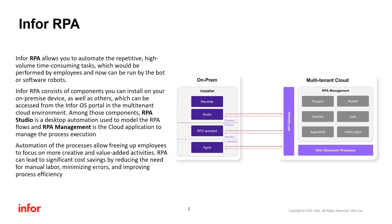InforRPA is a software part of the InforOS application. It allows the automation of business processes which are repetitive, high-volume, time-consuming, and normally would be performed by employees. With InforRPA, those can be run by bots or software robots. It is a multi-tenant cloud solution which consists of multiple components — some need to be installed on your on-premise devices, while others reside in the cloud environment.